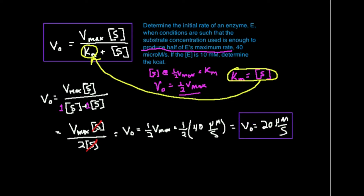If this question were worded such that it was not at half of the enzyme's maximum rate, then you would have to be given more information — you couldn't solve it like that. The only time you can make the substitution that Km equals the substrate concentration is if, and only if, you're at half of the maximum rate of the enzyme, or half of the Vmax. Note: I substituted Km for substrate concentration, but I also could have put Km in place of S — you'll get the same answer because they cancel anyway.